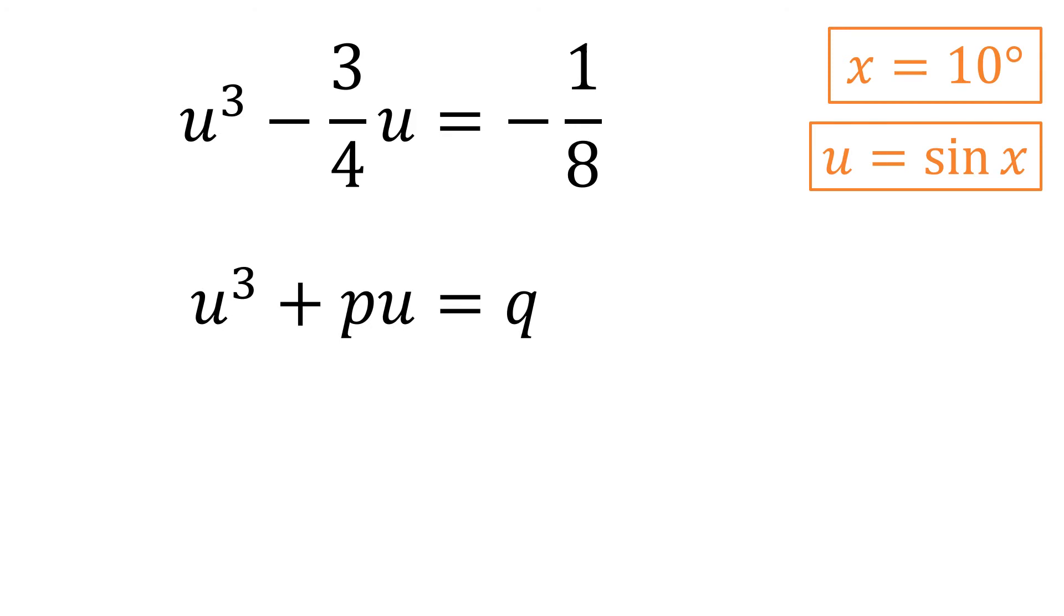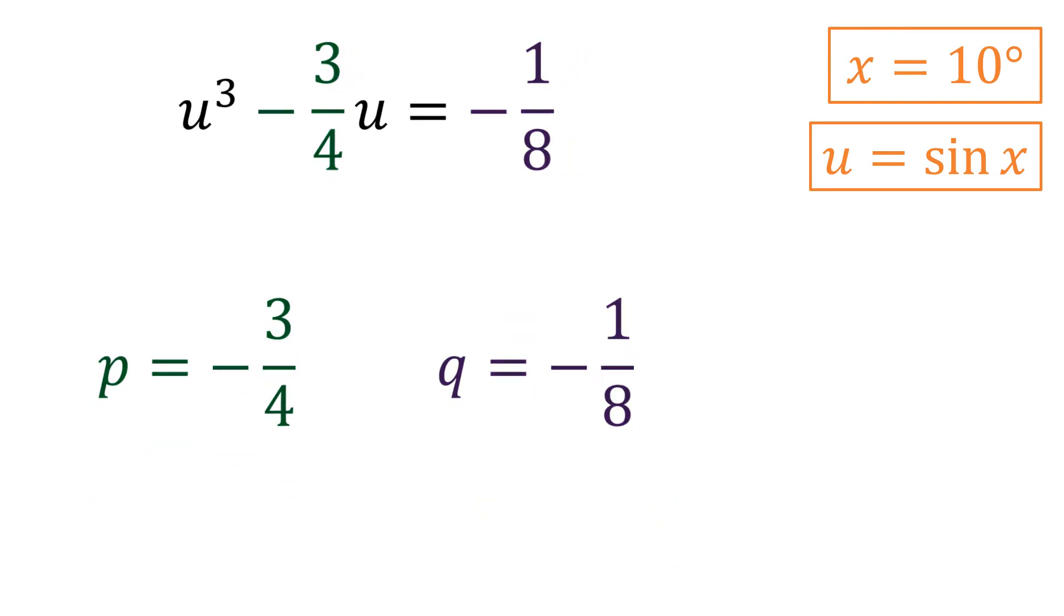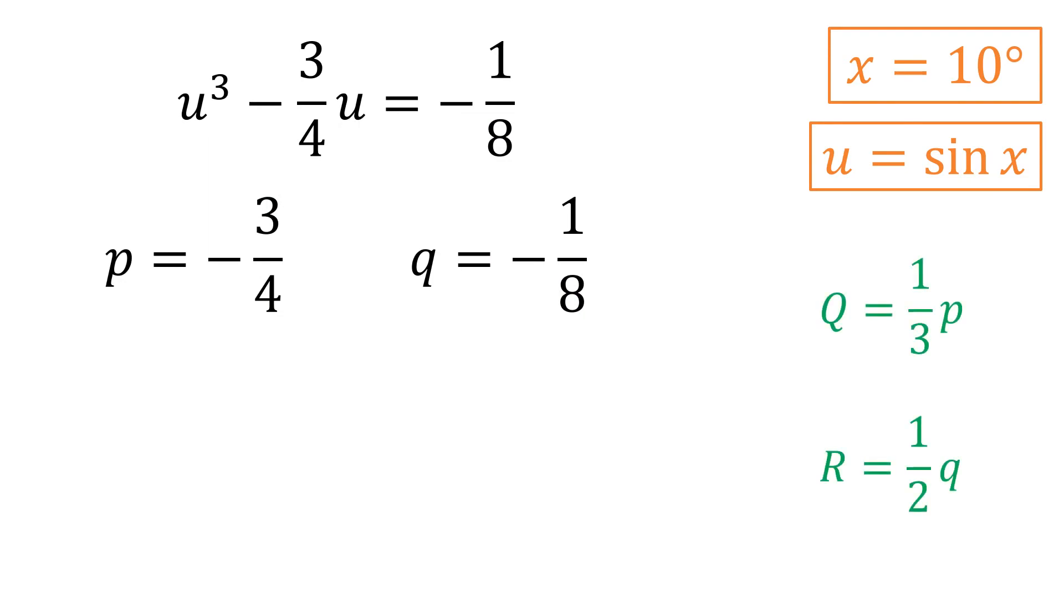We can see from our equation that the value of P is negative three fourths and the value of Q is negative one eighth. These don't seem so bad. We'll be using these two values in our capital Q and capital R variables. So capital Q is going to be one third times negative three fourths, which will be negative one fourth. And we'll tuck that away for a moment. Capital R is going to be one half times negative one eighth, which is negative one sixteenth. And let's tuck that away as well.